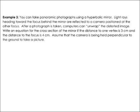All right, example three says you can take panoramic photographs using a hyperbolic mirror. Light rays heading toward the focus behind the mirror are reflected to a camera positioned at the other focus.